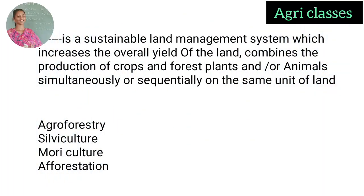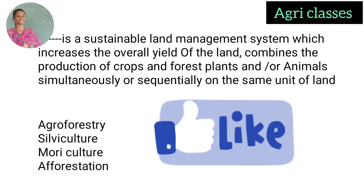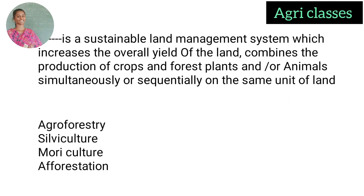First question: DASH is a sustainable land management system which increases the overall yield of the land, combining the production of crops as well as forest plants or animals simultaneously or sequentially on the same unit of land. This is called agroforestry, silviculture, mooriculture, or afforestation? The correct answer is agroforestry.